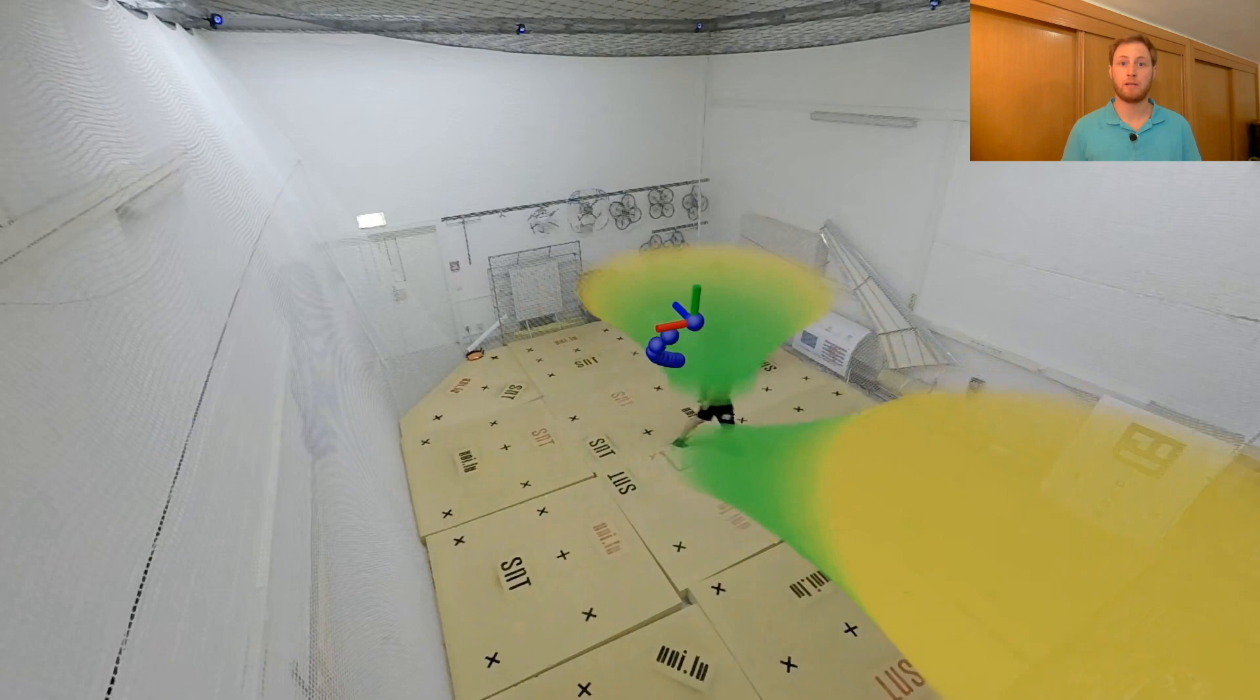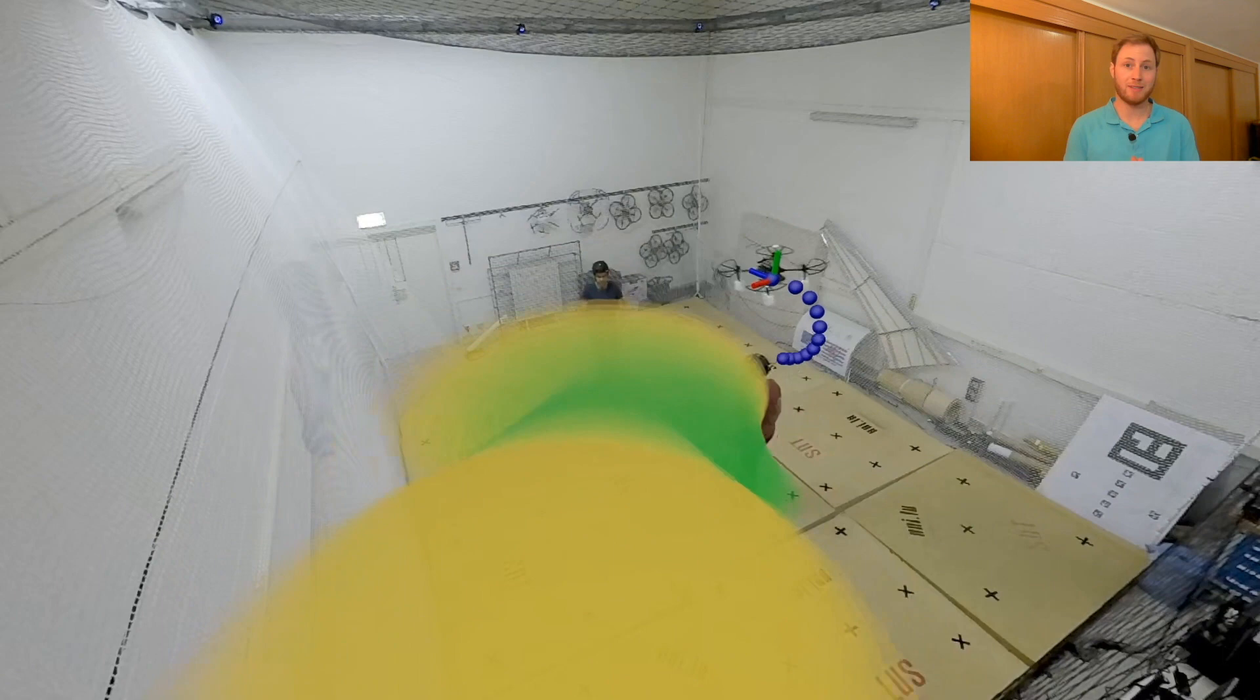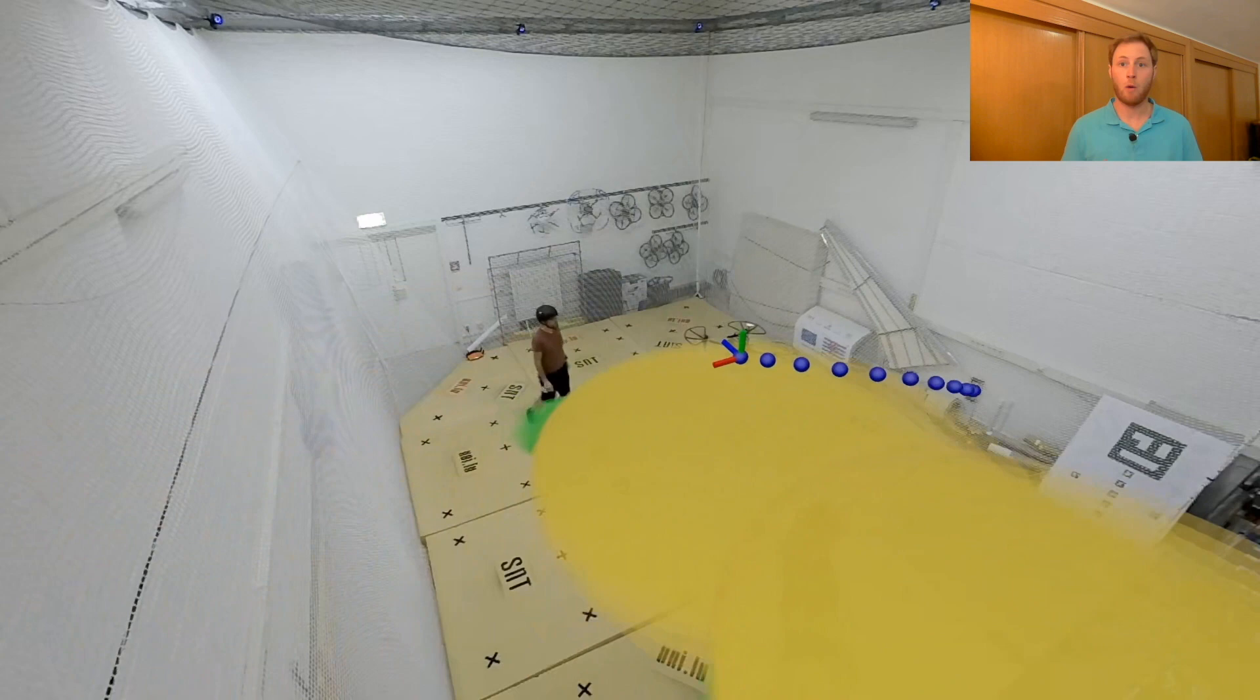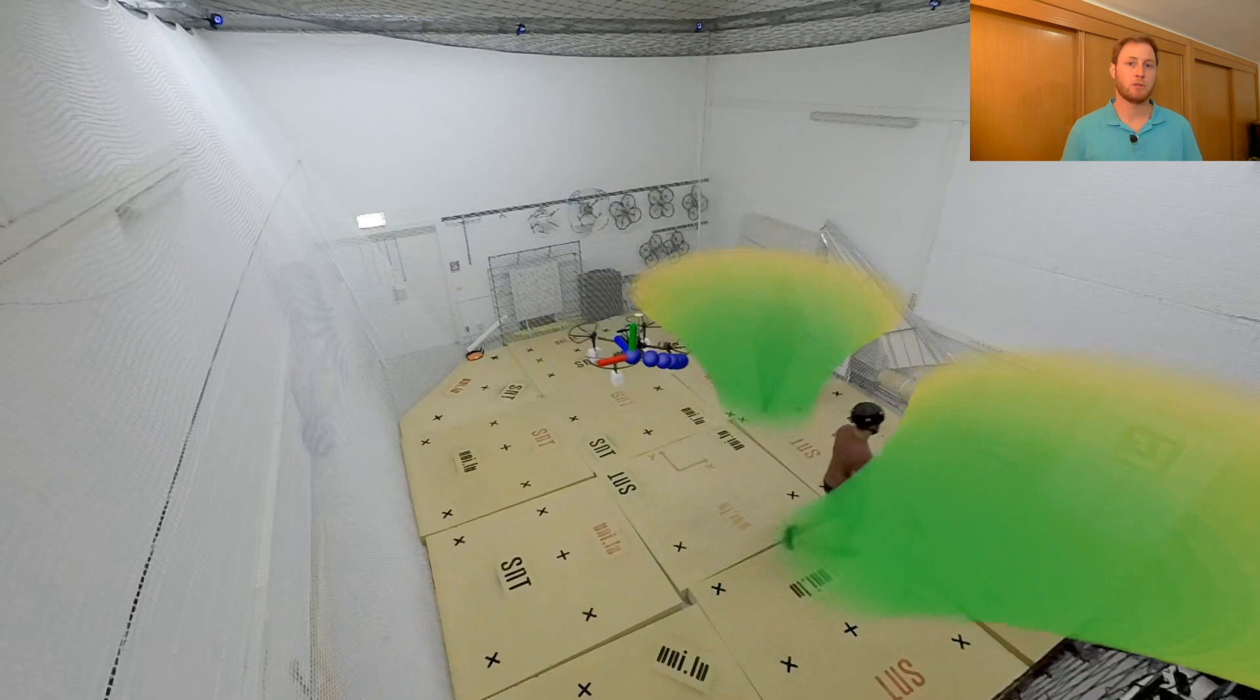The second one is a real experiment with two pedestrians who naturally walk inside a closed area where the robot is operating. As we can see, when the pedestrians intend to occupy the robot's safe space, evasive trajectories are planned and executed while tracking a fixed reference position at the center of the room.